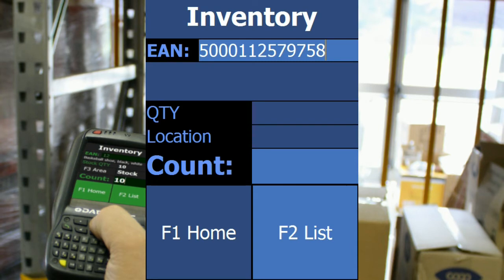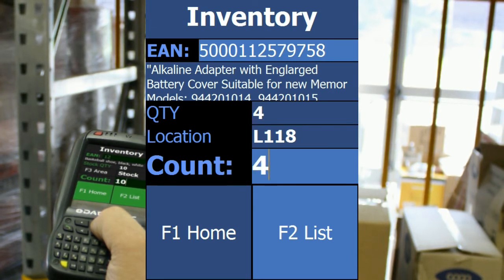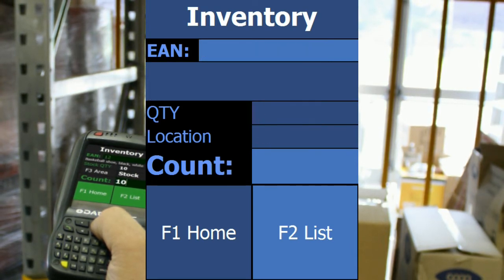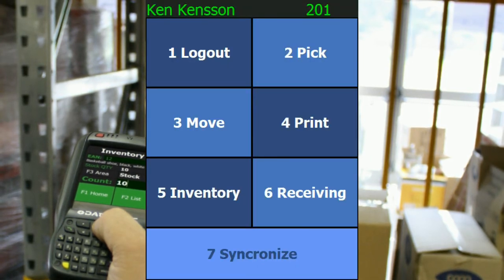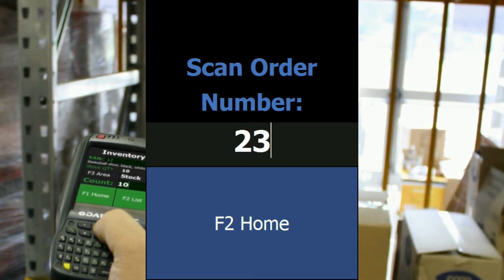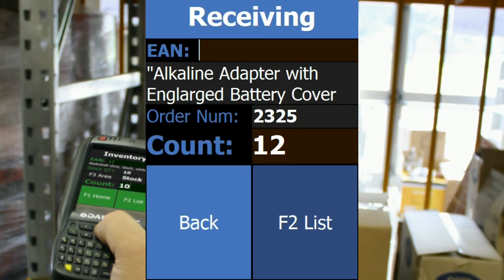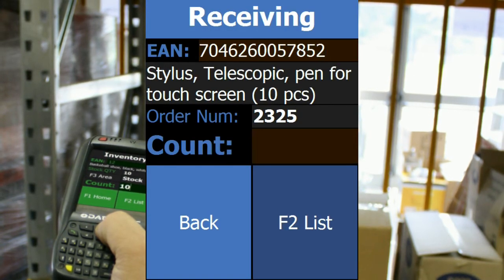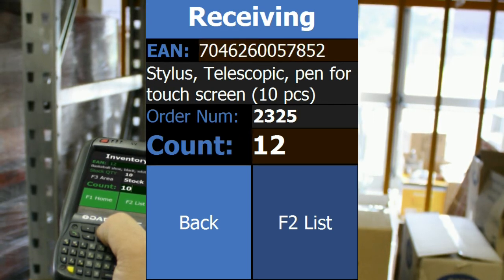The next function is inventory — you scan a barcode and enter the quantity you count on the shelf. The last function is goods receiving: you scan an order number or enter it manually on the keyboard, then scan a barcode and enter the quantity you have received, and this is sent to a list.